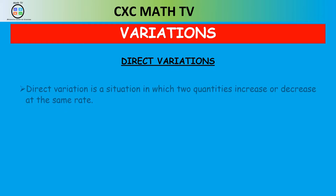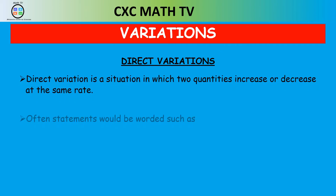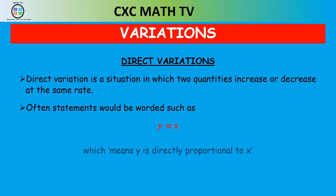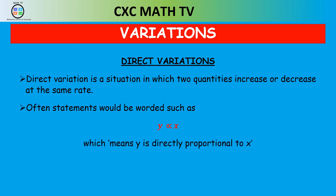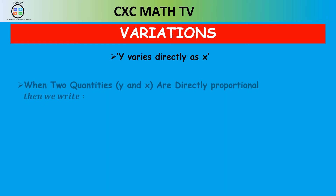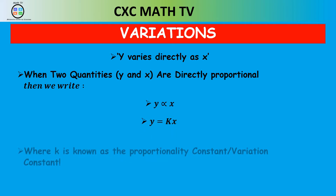Direct variation is a situation in which two quantities increase or decrease at the same rate. We use worded statements such as 'y is proportional to x' — that symbol between y and x means proportional, so it reads 'y is directly proportional to x.' When two variables y and x are directly proportional, we write y is proportional to x, giving us the equation y equals k times x, where k is known as the variation constant or constant of proportionality.